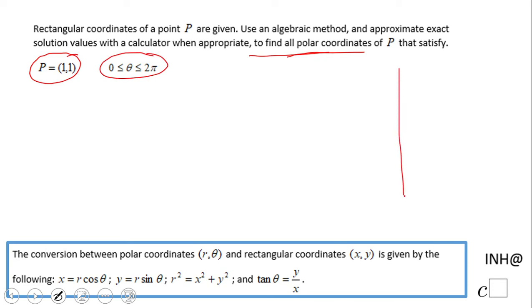So first of all, what I'll suggest you is to make a sketch. This point is (1,1) in rectangular coordinates. Let's say this is 1, this is 1. That will be point P.